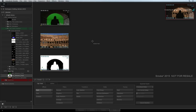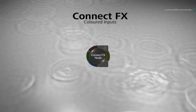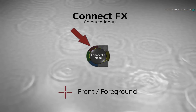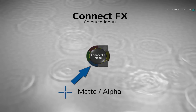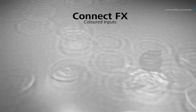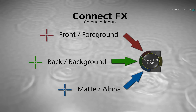The same colour scheme is used in the ConnectFX node-based compositing workflow. The red is for the foreground or front input, the green is for the background, and finally the blue is the alpha or matte. This should help keep you consistent when understanding what inputs go where and what they do in specific tools.